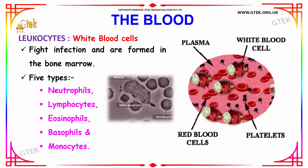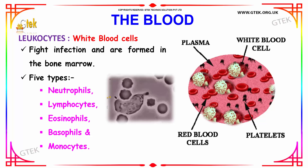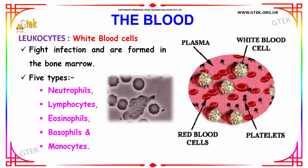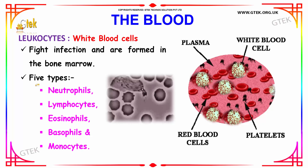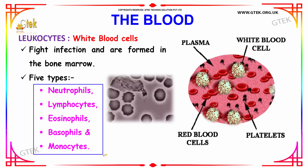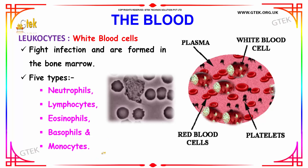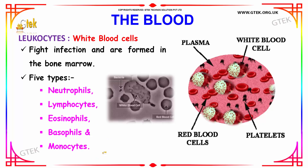Here you can see the white blood cells and how they attack bacteria that has entered the blood. There are five types of leukocytes: neutrophils, lymphocytes, eosinophils, basophils, and monocytes.